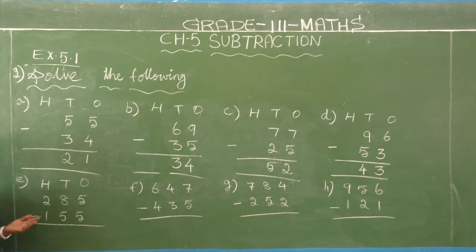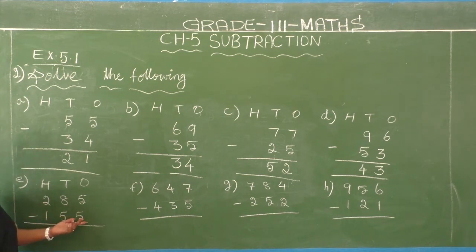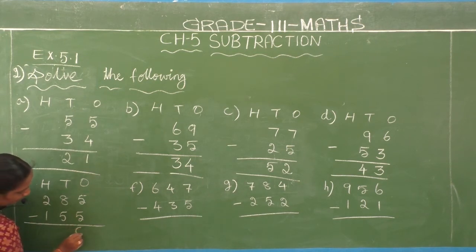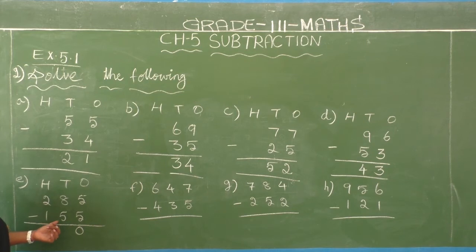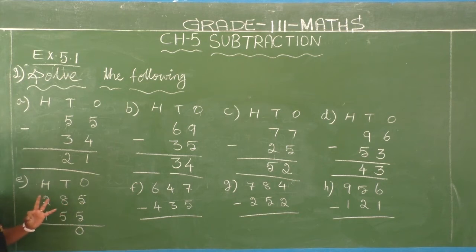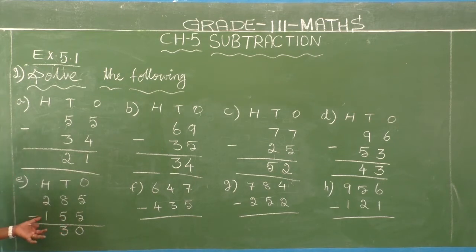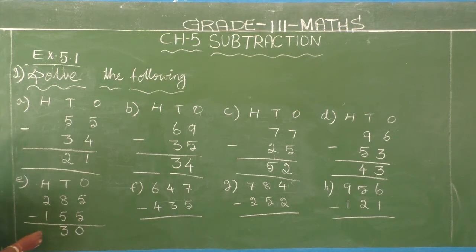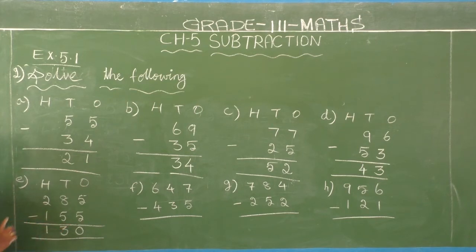E sum: 285 minus 155. Ones place — second number is 5, first number also is 5. Equally: 5 minus 5 equals 0. Tens place — second number is 5, first number is 8: 5 after 6, 7, 8. Difference is 3. Hundreds place — second number is 1, first number is 2: 1 after 2. Difference is 1. So 285 minus 155 equals 130.